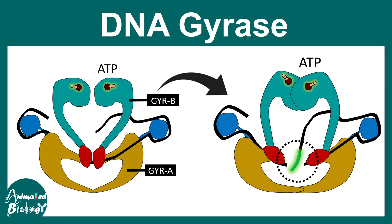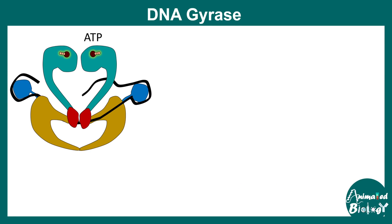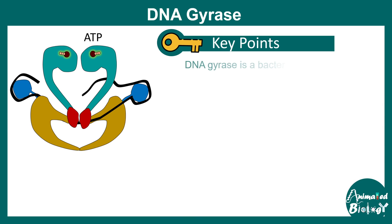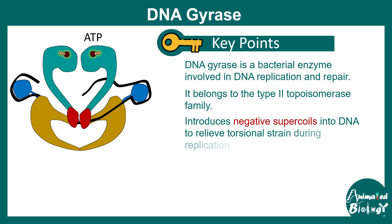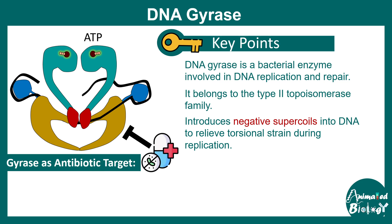In this video we'll be talking about DNA gyrase. Here are the key points: it's a bacterial enzyme involved in DNA replication and DNA repair. It belongs to the type 2 topoisomerase family of proteins. As the name suggests, it modifies the topology of DNA — it introduces negative supercoils into the DNA to relieve torsional strain during replication or transcription.